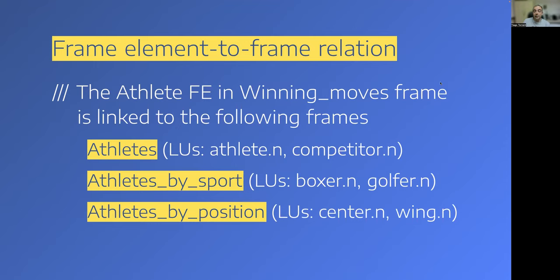In FrameNet Brazil specifically, we implement another kind of relation which connects frame elements in a given frame to another frame. For example, the Athlete frame element in the Winning Moves frame can be linked to the following frames: the Athletes frame, evoked by lexical units such as 'athlete' or 'competitor'; the Athletes by Sport frame, evoked by LUs such as 'boxer' and 'golfer'; and the Athletes by Position frame, evoked by lexical units such as 'center' or 'wing.'